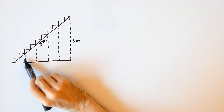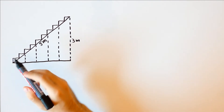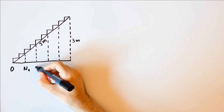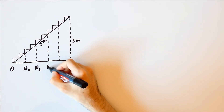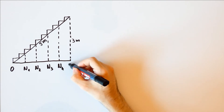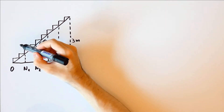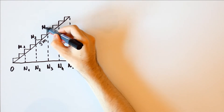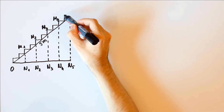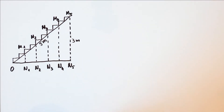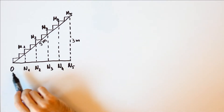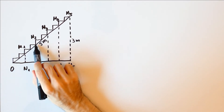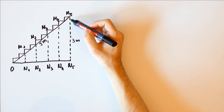Do we have to measure the height of each support? Well, if we denote the corresponding points as O, N1, N2, up to N5, and over here M1, M2, up to M5, then we can see that the triangles O-N1-M1, O-N2-M2, up to O-N5-M5 are similar.